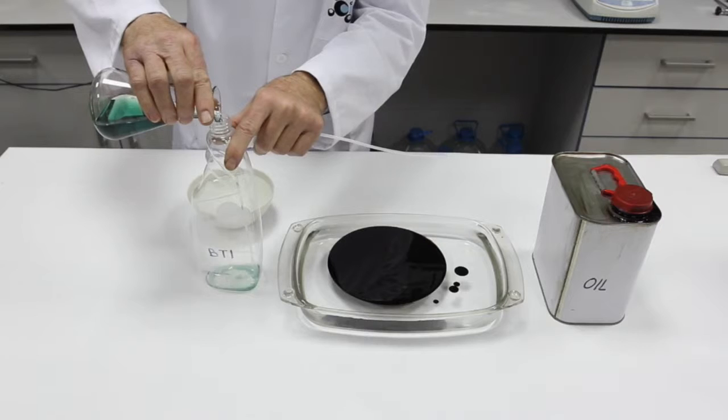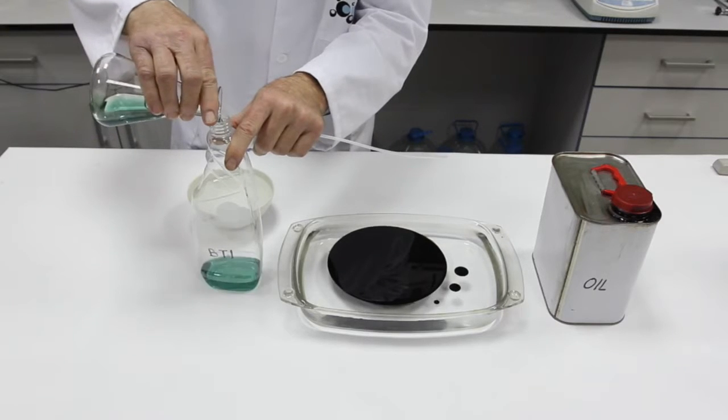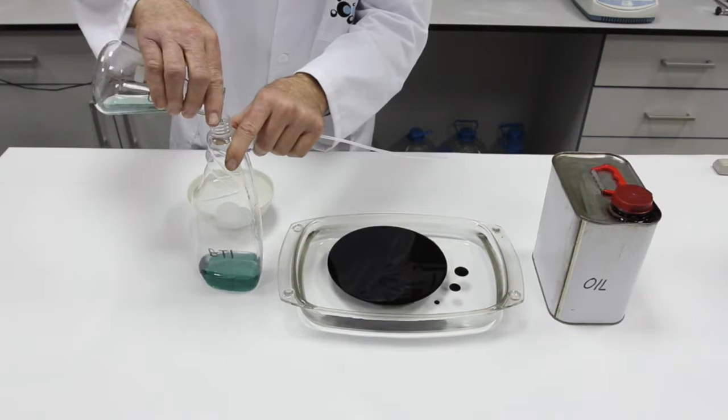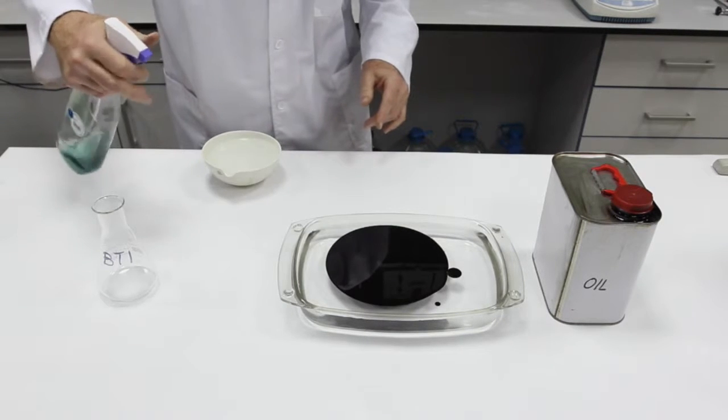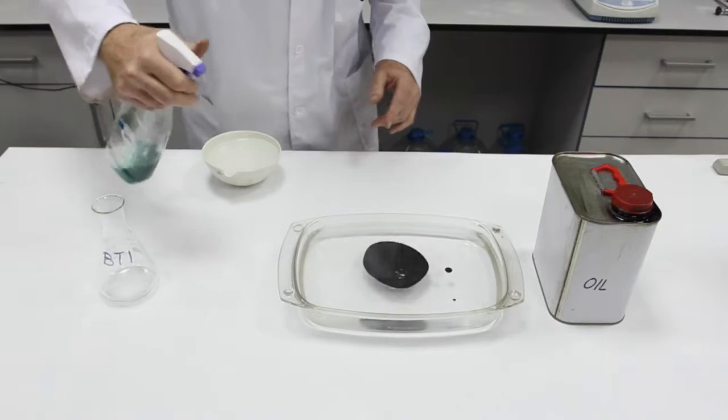The technician fills a spray bottle of BTI solution and applies over the crude oil spill area. The extension of the crude oil spill vastly shrinks in size in reaction to the BTI chemical.